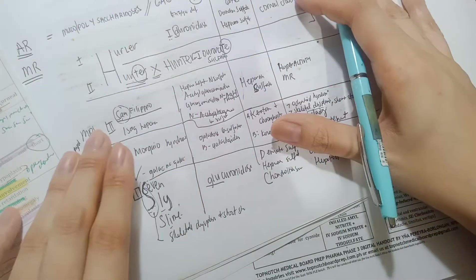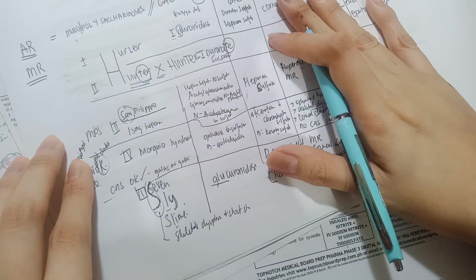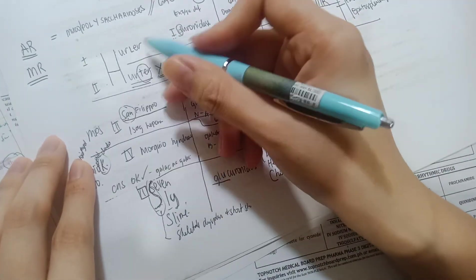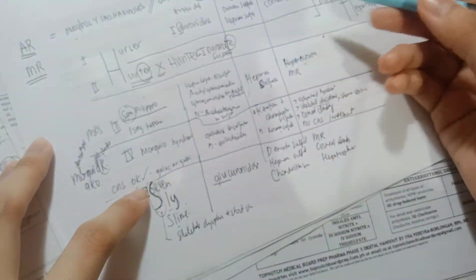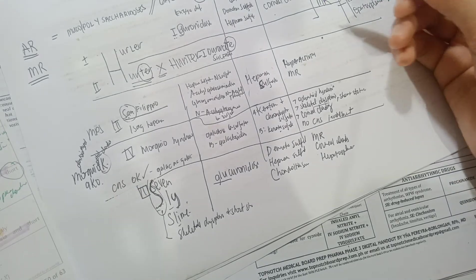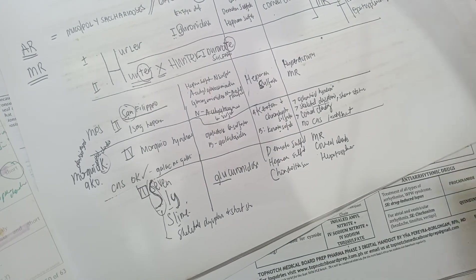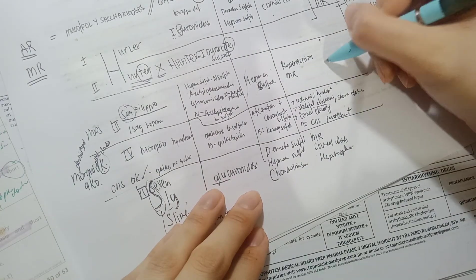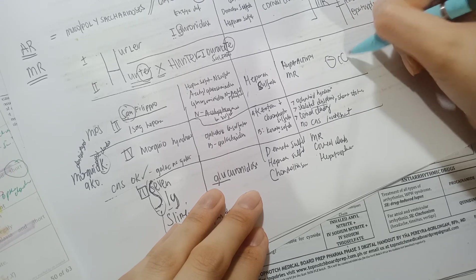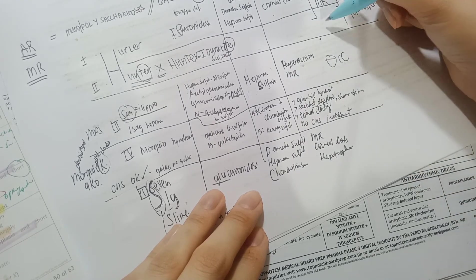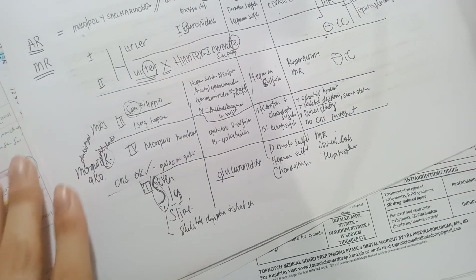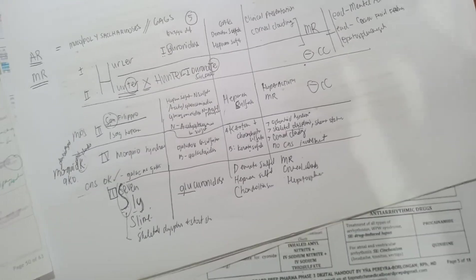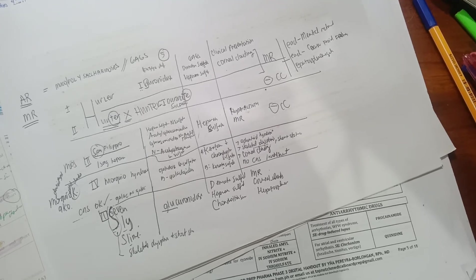To summarize: all MPS types are autosomal recessive except Hunter, which is X-linked. All have mental retardation except Morquio. For corneal clouding, Hunter and San Filippo do not have corneal clouding, while the others do. Hope this helps!